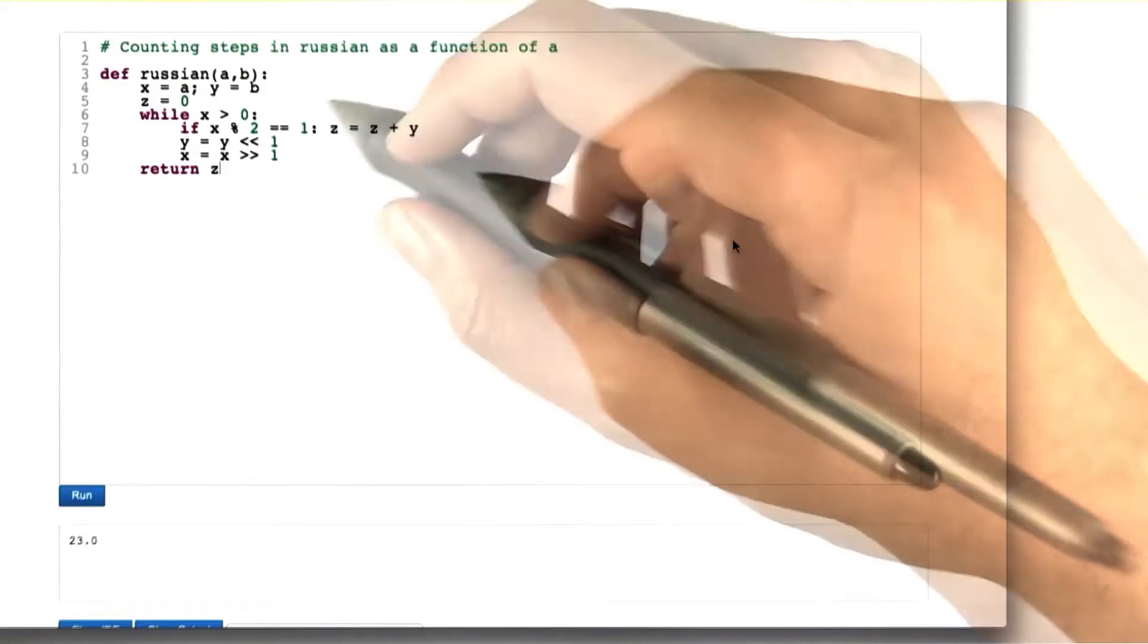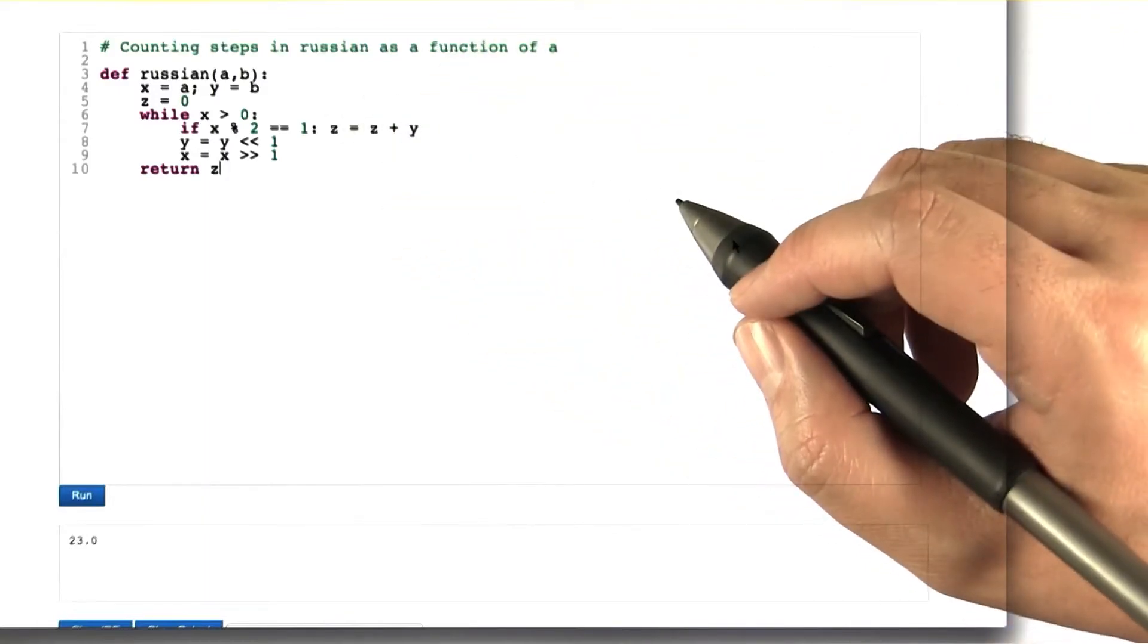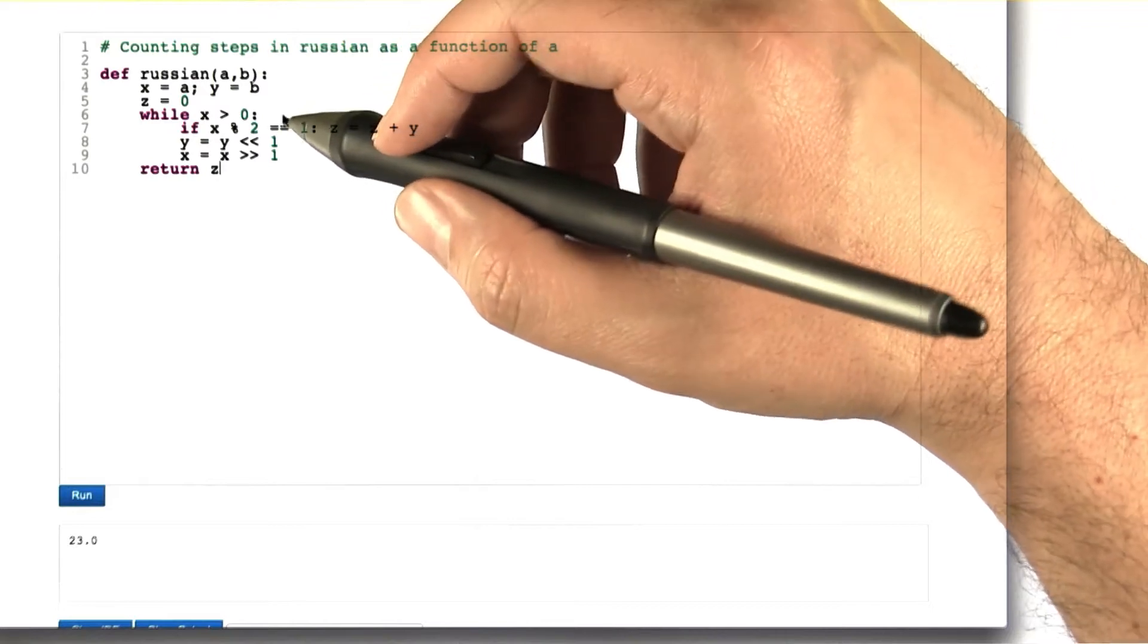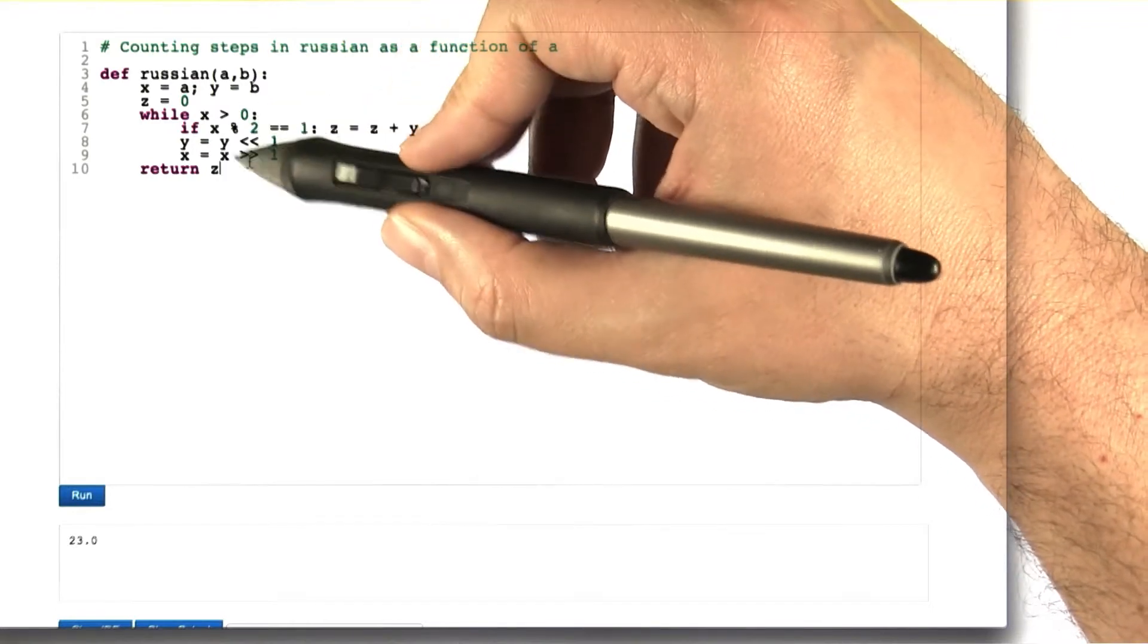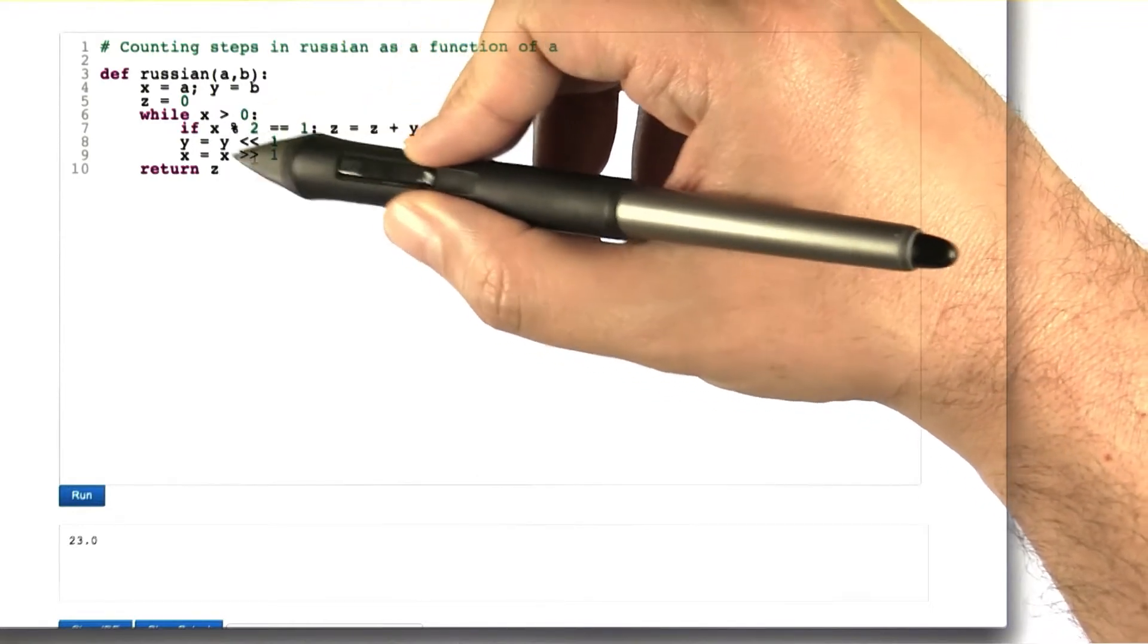All right, let's go back to now using this idea to count the number of steps in Russian as a function of a. So the thing that you should be noticing here is we now know the number of times this loop is going to be executed.